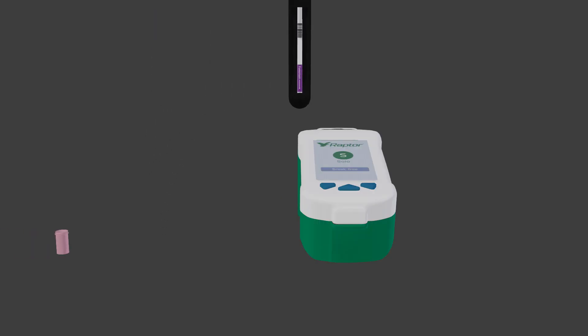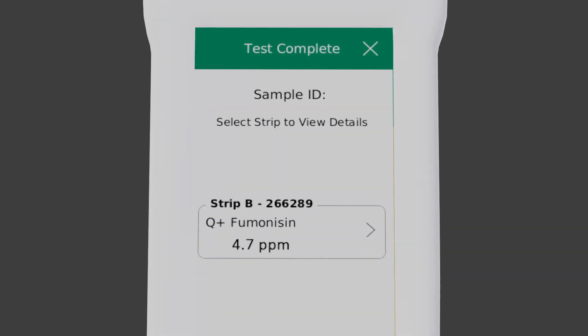Place Raptor cartridge into port. Add 400 microliters of sample to cartridge. Result will be displayed. Remember to multiply your result by the dilution factor. For this example, multiply by 2.